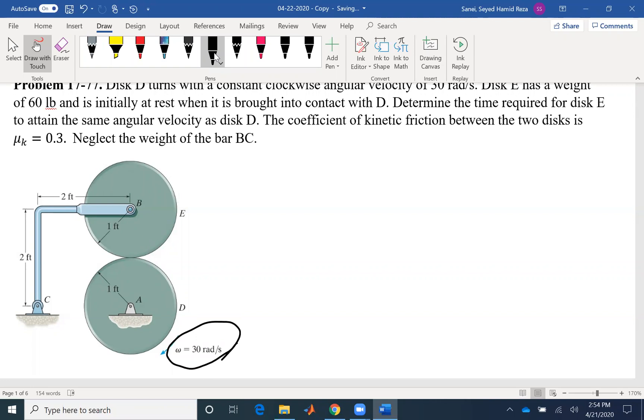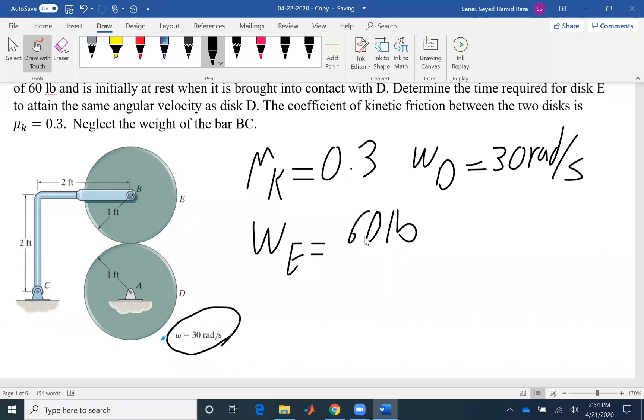Let's write our known and unknown. We know μk is 0.3. We know ωD is 30 radians per second. And we know the weight of disk E to be 60 pounds. The question is asking for the time that it takes so the two disks would have the same velocity.